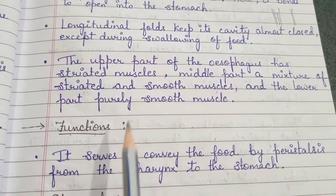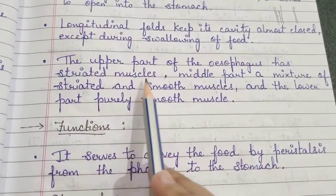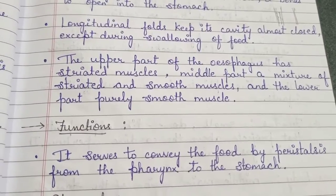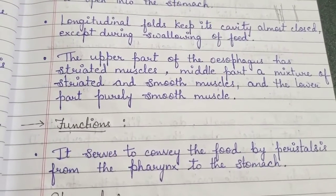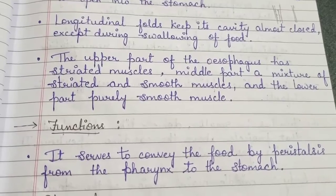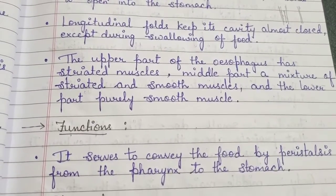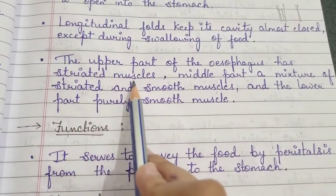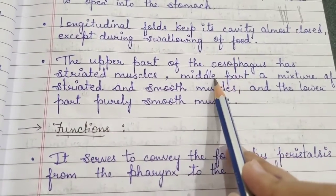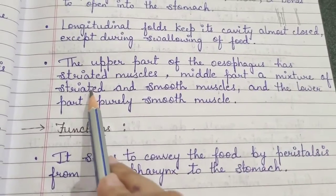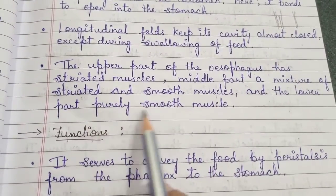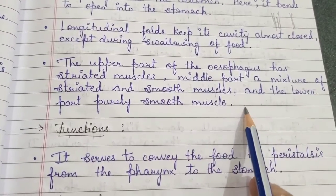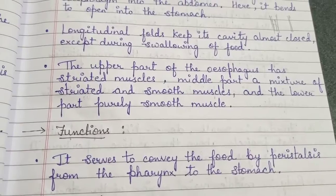In the upper esophagus there are striated muscles. As you know, muscles are of 2-3 types: striated muscles, non-striated muscles, and smooth muscles. Striations mean strips or lines present on the muscles. So the upper esophagus has striated muscles, the middle part has a mixture of striated and smooth muscles, and the lower part has purely smooth muscles that are attached to the stomach area.